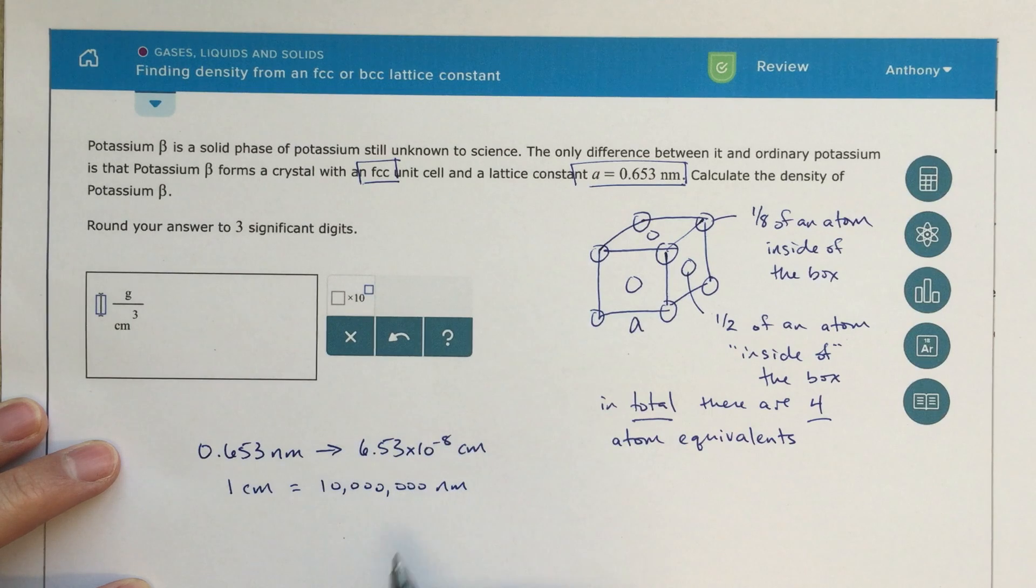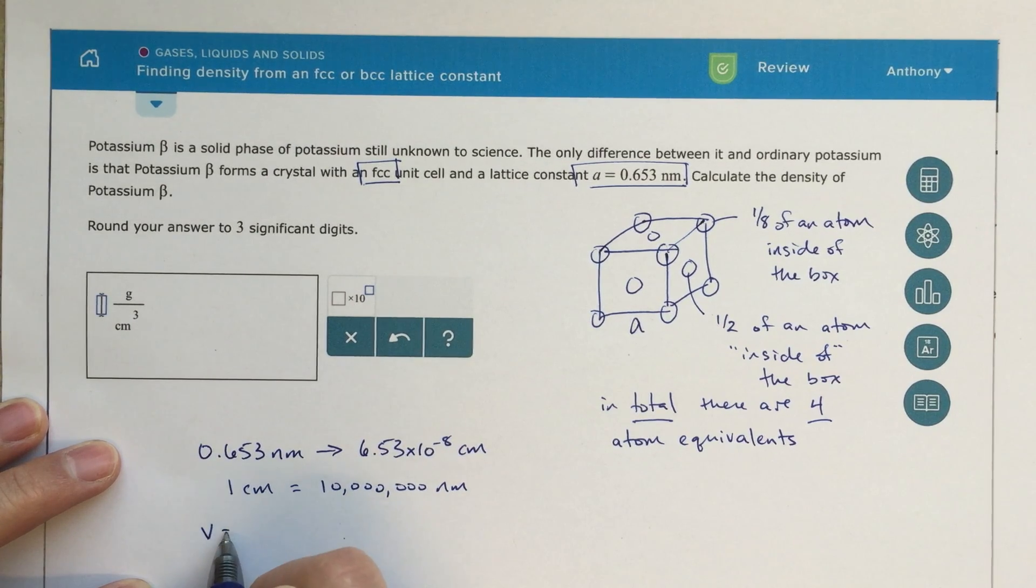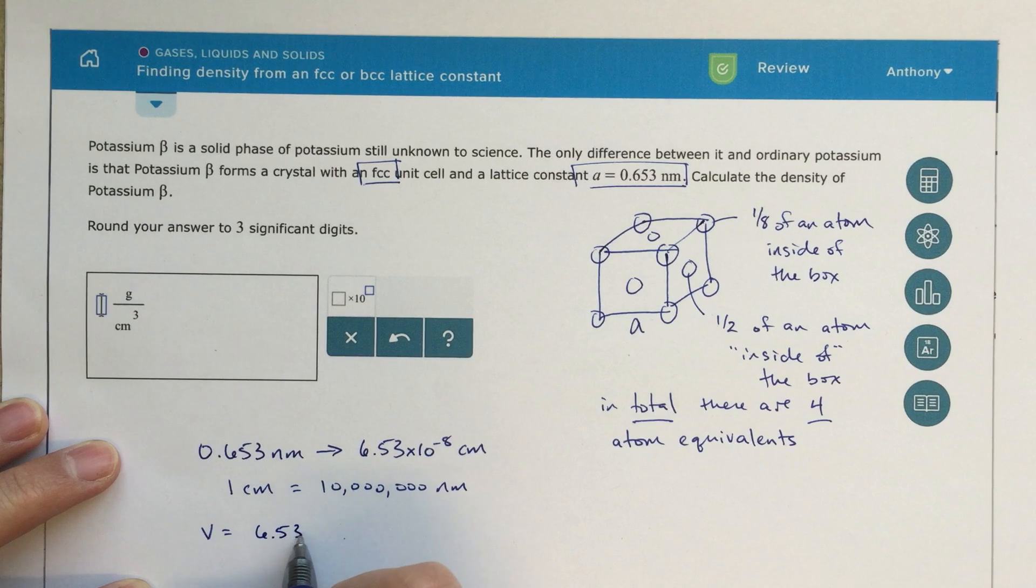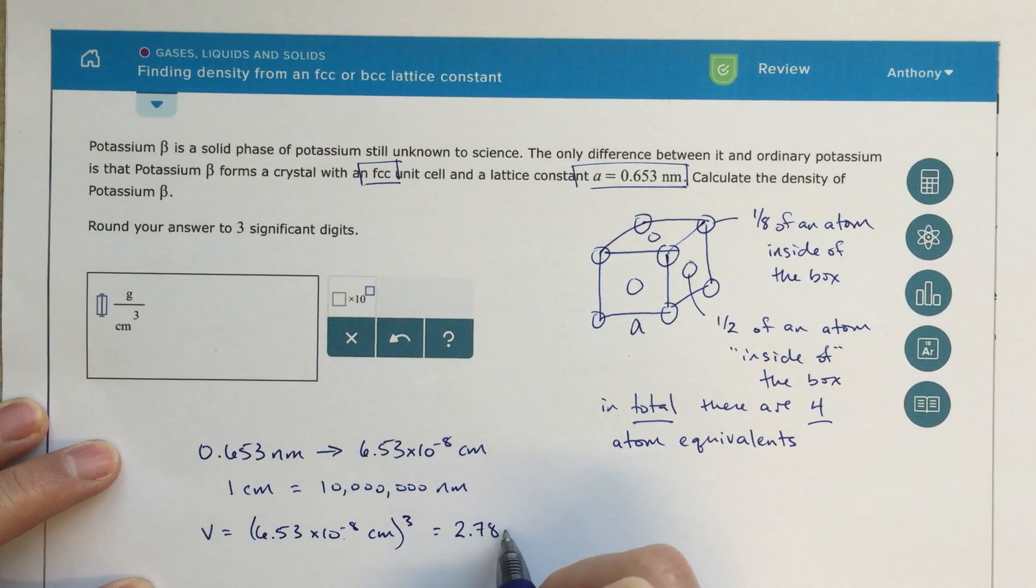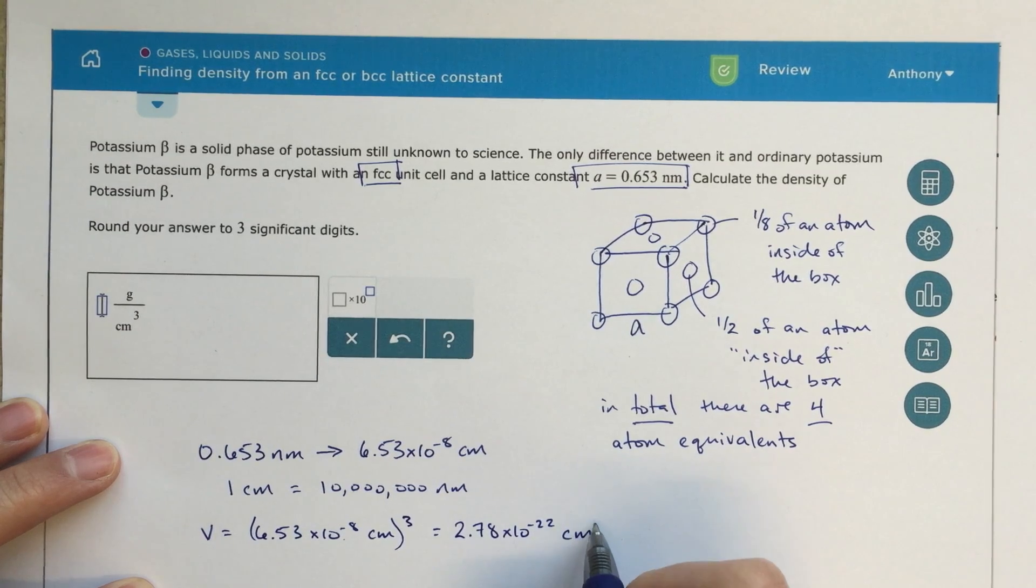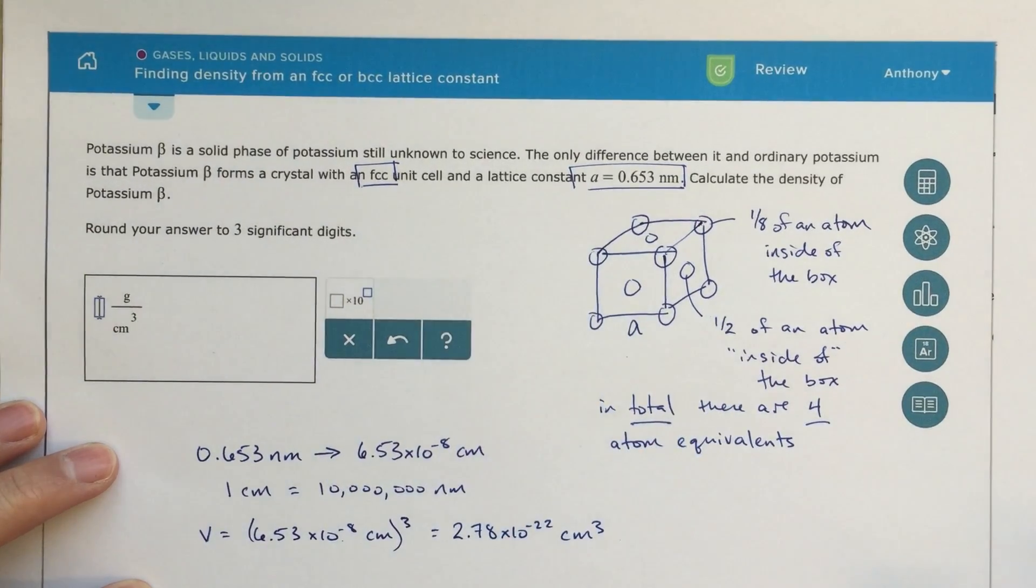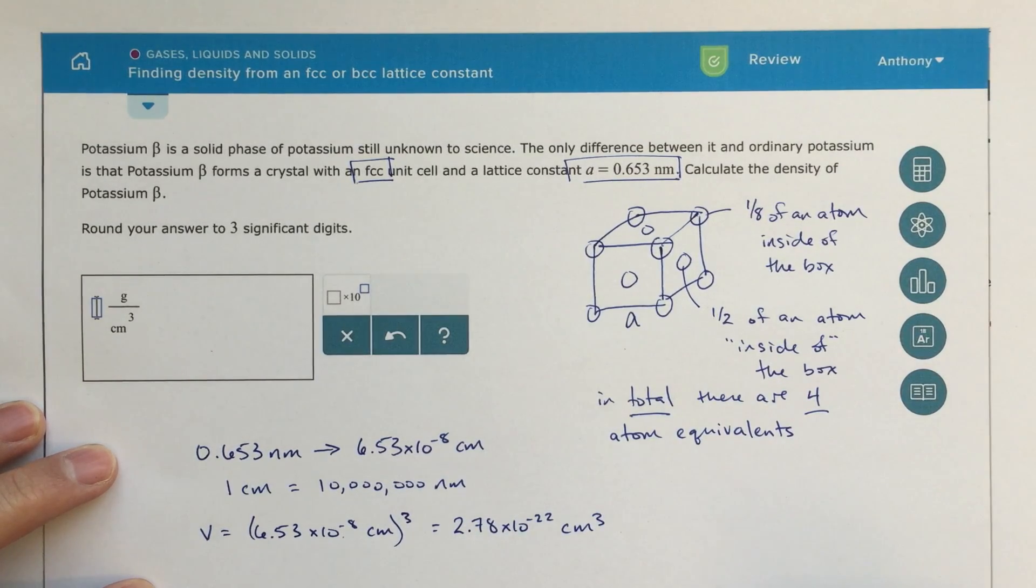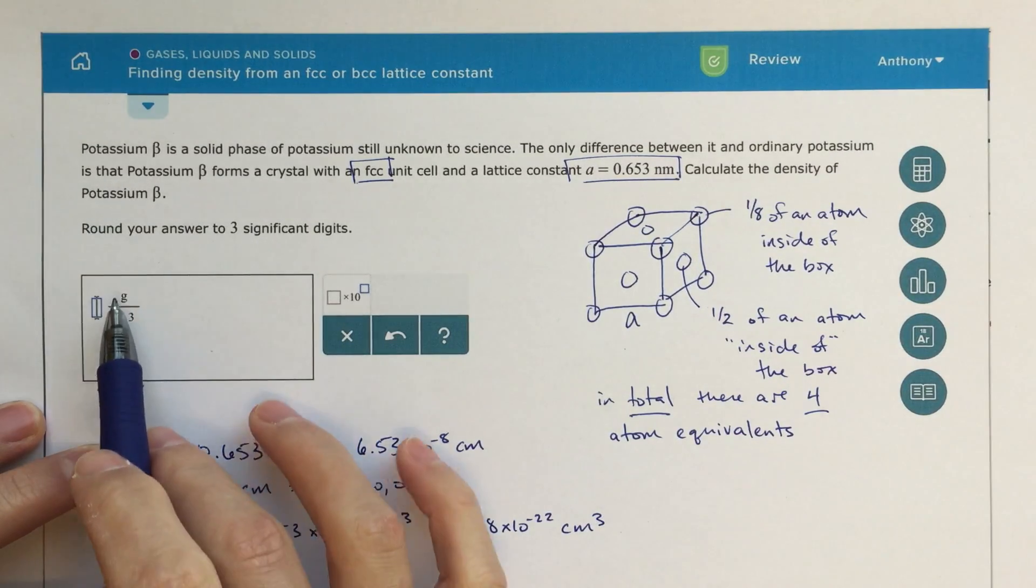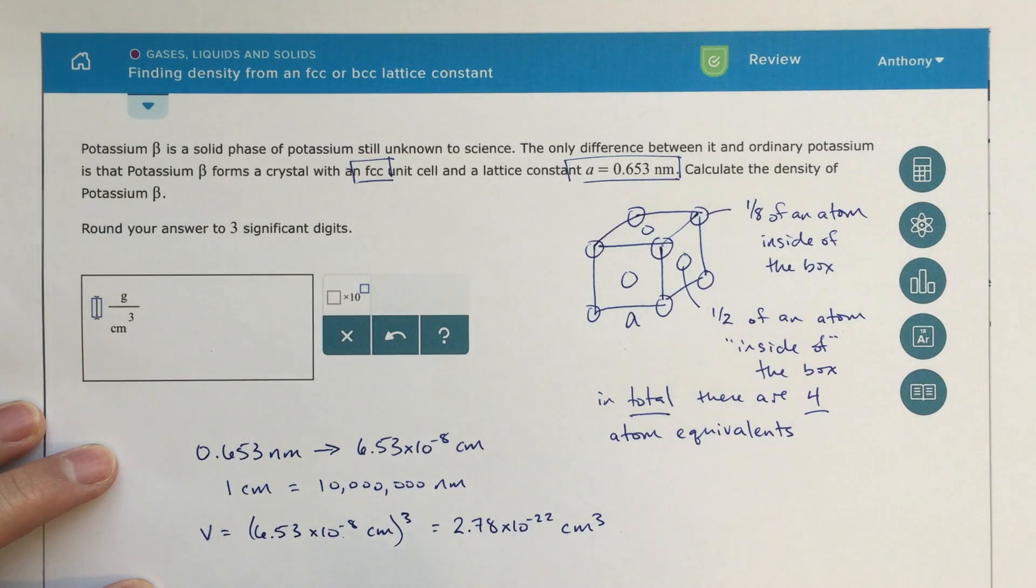So either way, this is our number of centimeters. If I want to find my volume, that's going to be 6.53 times 10 to the minus 8th centimeters cubed, and that equals 2.78 times 10 to the minus 22nd centimeters cubed. This is the first piece of information. I know that this is the volume, so obviously when I'm doing a problem like this, I know that I need to find the mass over the volume. That's going to be my density. Density is mass over volume. And because the units given here are grams over centimeters cubed, that tells me right away I want to be using centimeters cubed or centimeters to figure out that volume.